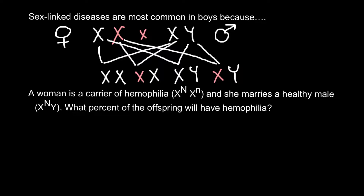Next question: a woman is a carrier of hemophilia and she is heterozygous, and she marries a healthy male who is normal for this trait. What percent of the offspring will have hemophilia? We can answer this question using the example above — we can build a forked-line table or a Punnett square. The female would be heterozygous, so her genotype would be X capital N and X small n, where capital N stands for the normal allele and small n for the recessive allele. The male has X capital N and Y chromosome, so males are hemizygous — only one X chromosome is present.